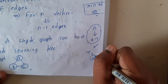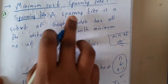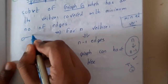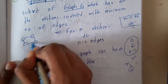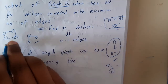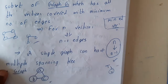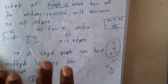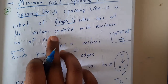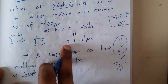A spanning tree is a subset of a graph. In a graph you can have loops or cycles, but if you want to convert it into a loop-less structure it becomes a tree — you remove the cycle. So a spanning tree is a subset of a graph which has all the vertices covered with the minimum number of edges, which means n minus 1 edges for n vertices.